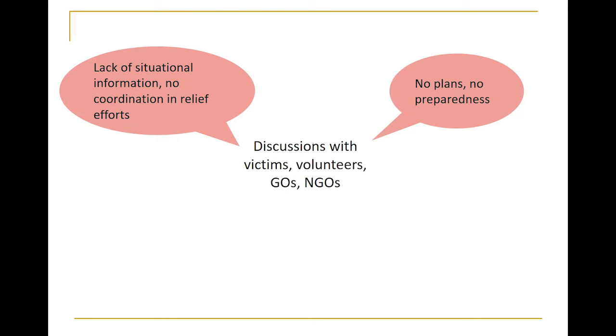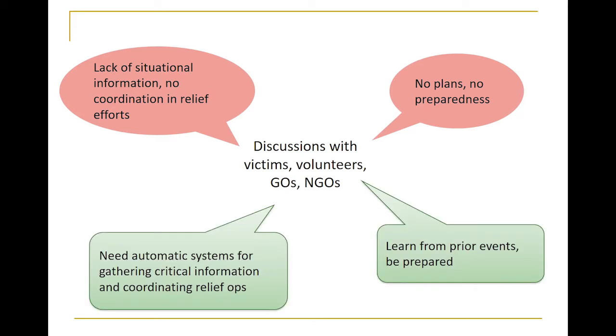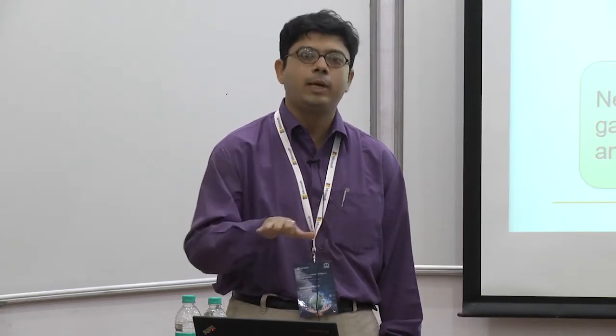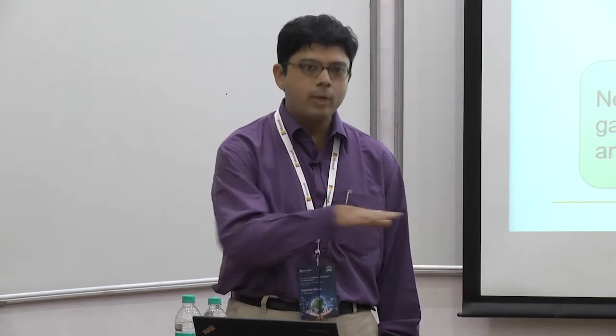We asked them: how can a computer scientist help? First they said we need automated systems during these times because often human beings are incapacitated. Even the doctors in that area have casualties. Like the Nepal earthquake in 2015 — it was reported that 60% of the local medical personnel were affected, so they were of no use. Since human beings are not able to function, we need automatic systems which will still be functional.